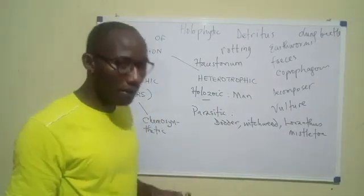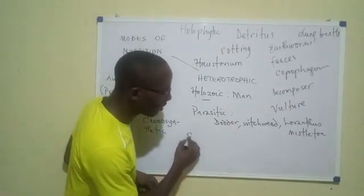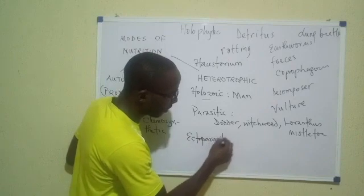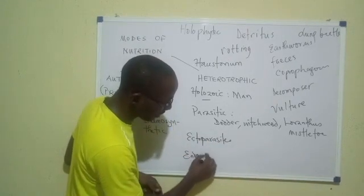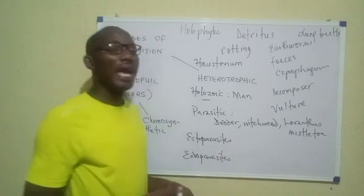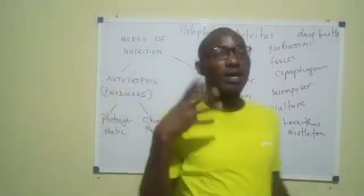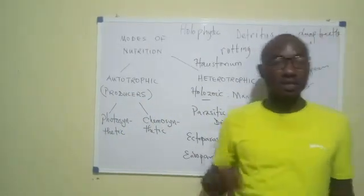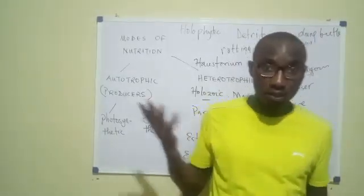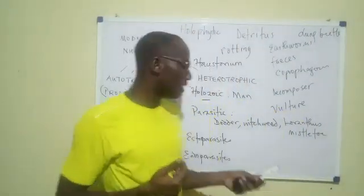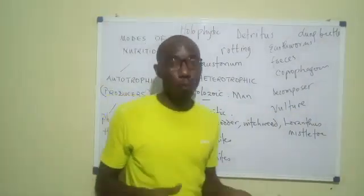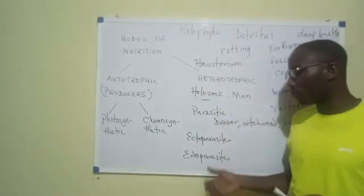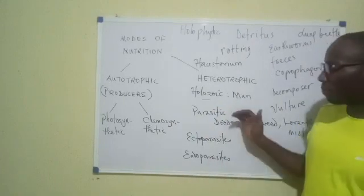Some animals too are parasites. There are animal parasites that stay outside the body — we call them ectoparasites — and then we have endoparasites. Endoparasites operate from within, whereas ectoparasites operate from the outside. Examples of ectoparasites include lice, mites, ticks, and bugs. For endoparasites, the majority are worms — roundworms, hookworms, and flatworms like the blood fluke and the liver fluke are all examples of endoparasites.